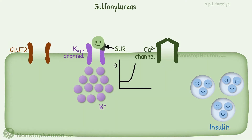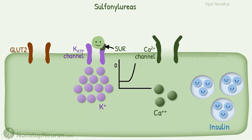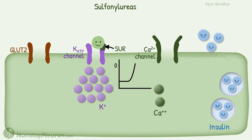Depolarization of the cell, opening of voltage-gated calcium channels, calcium influx, and release of insulin. Insulin finally decreases blood glucose level, which is the main problem in diabetes.